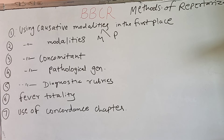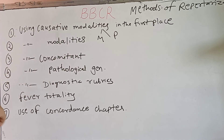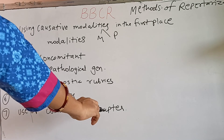In cases where there are no characteristic symptoms and the picture is not clear, we use diagnostic rubrics for palliation. The sixth method is fever totality, which we have already seen — it is a very useful chapter for fever cases, whether simple or complicated. The seventh method is the use of the concordance chapter.